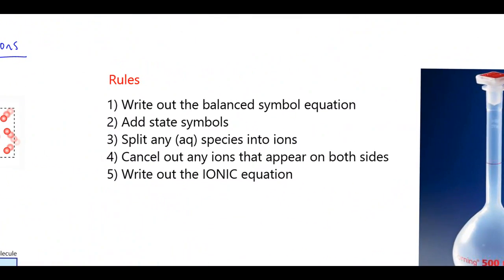Getting on to writing ionic equations, there are five basic rules which we're going to go through with some examples. Rule one: write out the balanced symbol equation. Rule two: add state symbols — that is essential and is the key to getting this right. Rule three: split any species that are dissolved in solution, putting any aqueous (AQ) species into their separate ions.